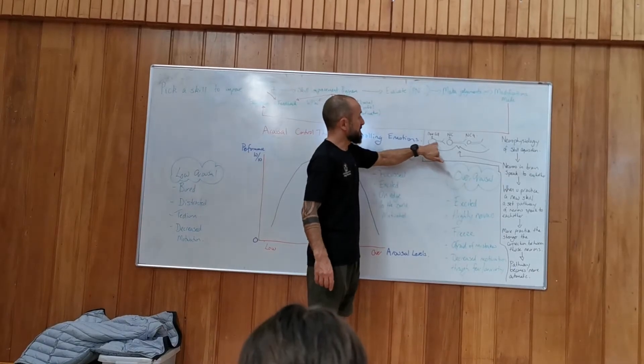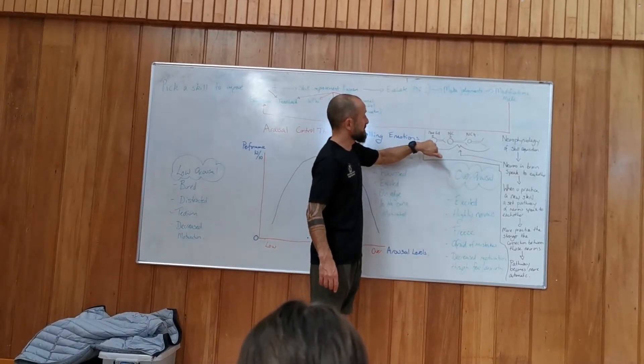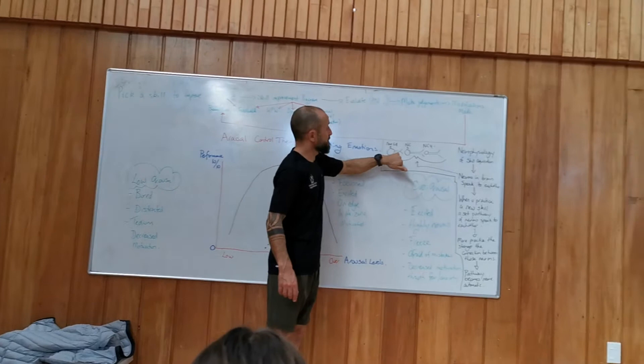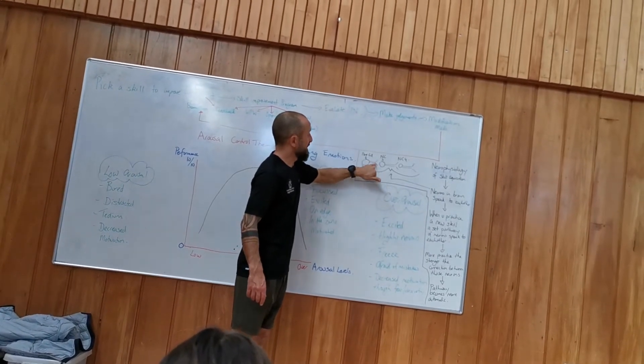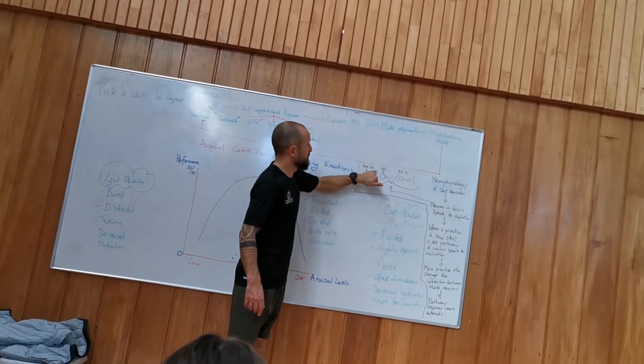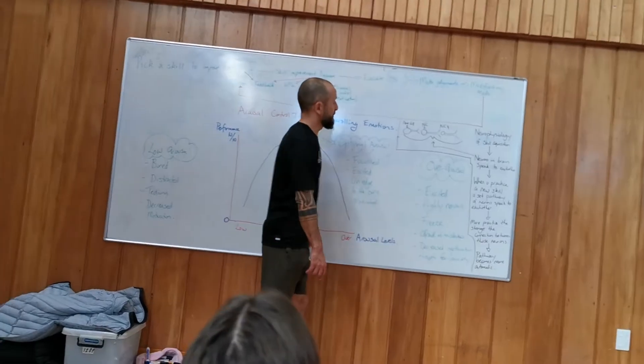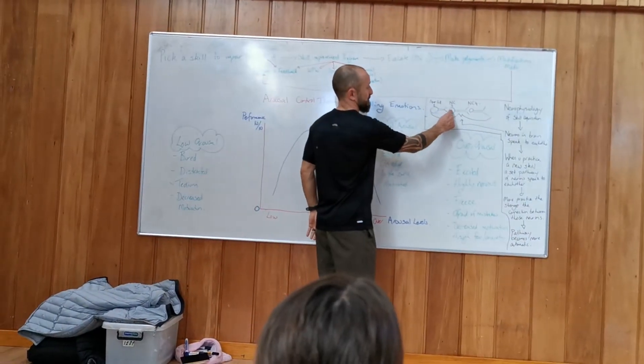And they communicate to each other in the brain via this thing here. So, the circle is a cell. This is called an axon. And these are called the terminals of the axon. And what happens is there's a chemical reaction between each of the cells.